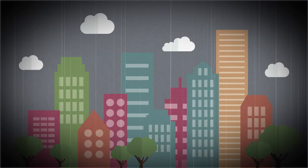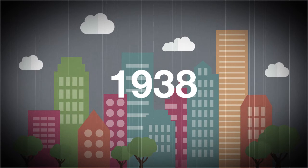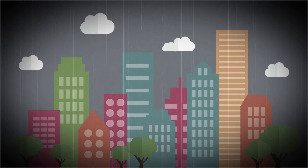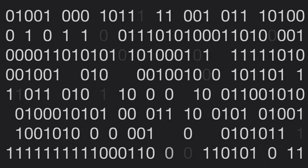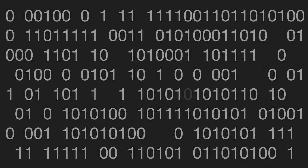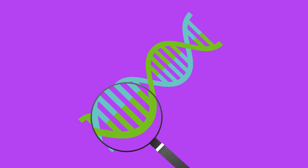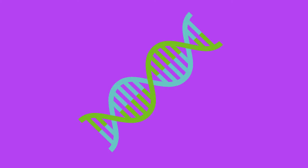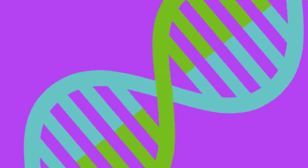A long time ago — before I was born, actually before my dad was born, before the 1940s — there was only one programming language called machine language. Machine language looked like a bunch of random numbers arranged in zeros and ones and was not very readable to humans. It was kind of like trying to read someone's DNA and decoding how they look — that's not gonna work — but that's where it all started.